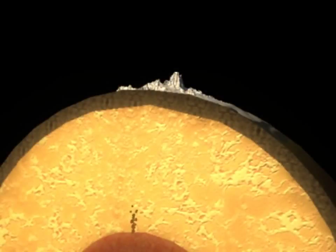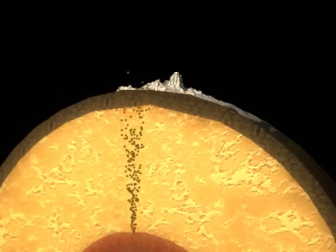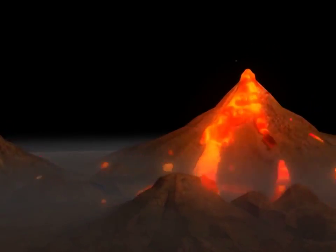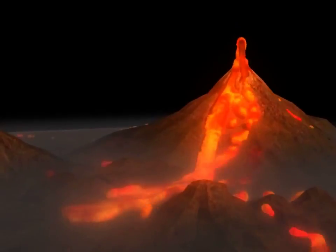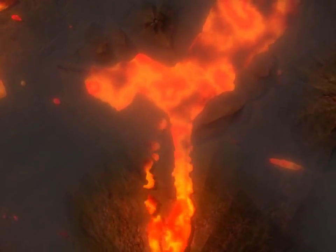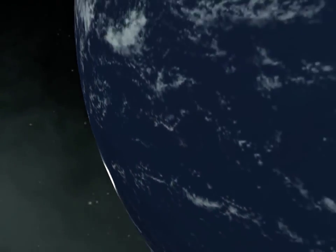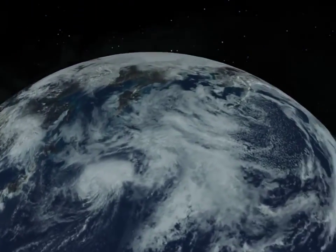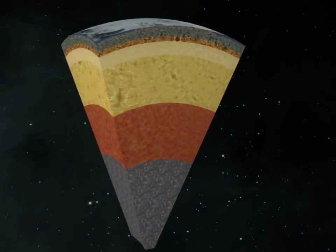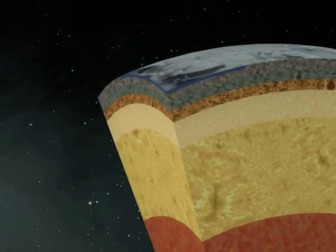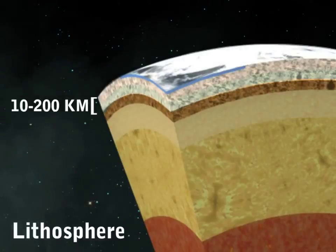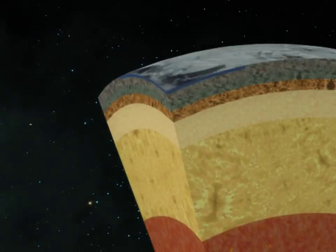The upper layer of the mantle is called the asthenosphere. The hot magma from the asthenosphere travels to the surface of the earth and escapes as lava from volcanoes. In addition to the asthenosphere, there is a layer known as the lithosphere. The crust and the uppermost layer of the mantle together form the lithosphere. While the asthenosphere has a depth of 400 kilometers, the lithosphere extends from 10 to 200 kilometers.